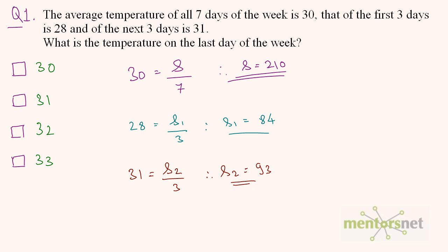So we can find out the temperature of the last day. We can write the complete sum as S equals S1 plus S2 plus the temperature on the last day, let us name it as T. So 210 equals 84 plus 93 plus T. Solving this, T will be equal to 33.